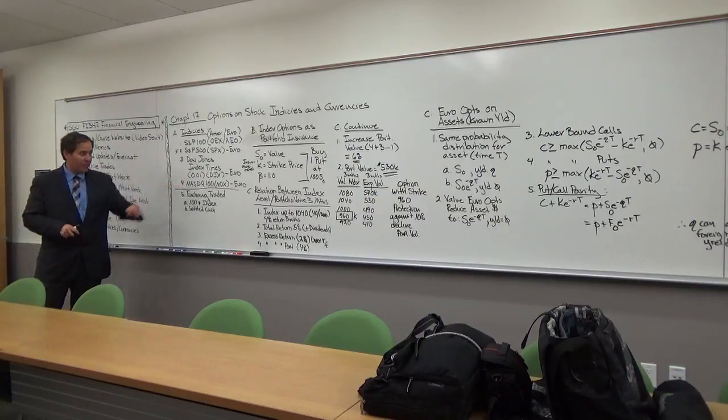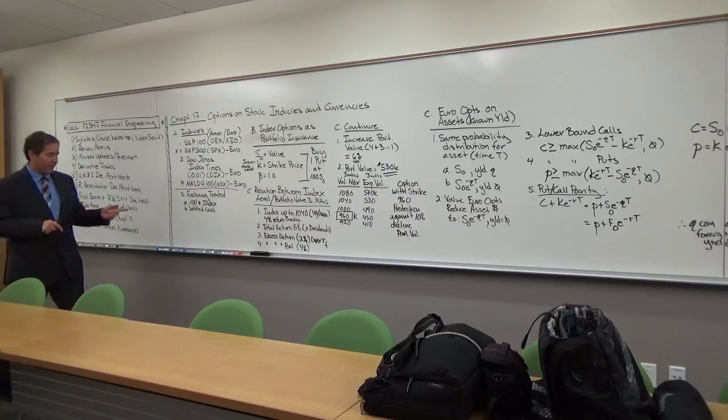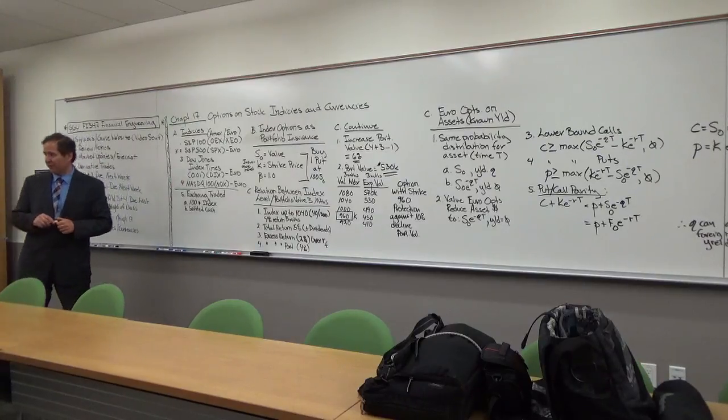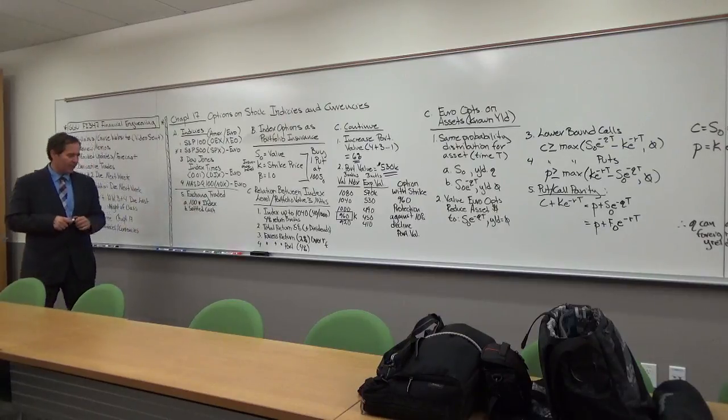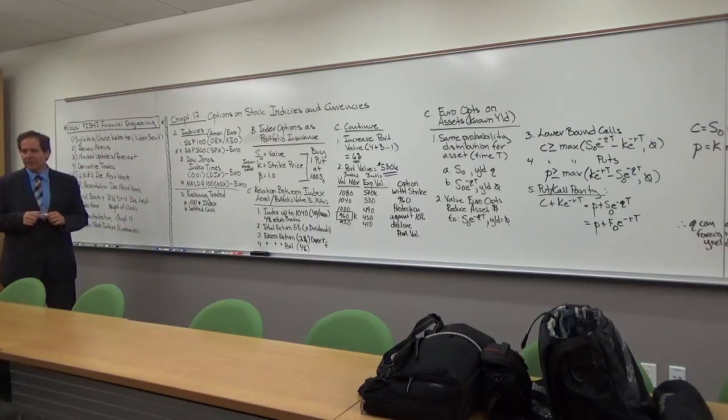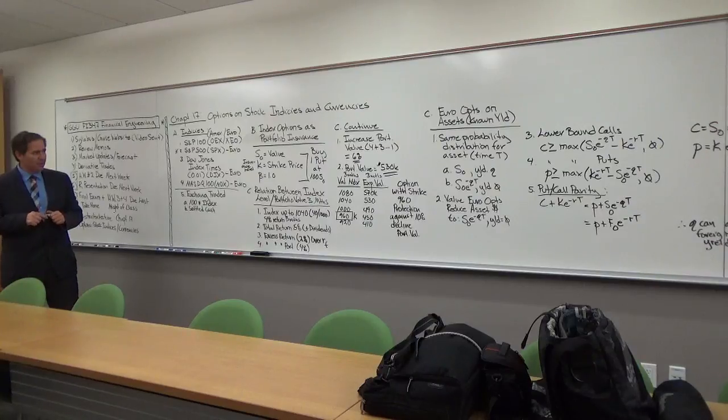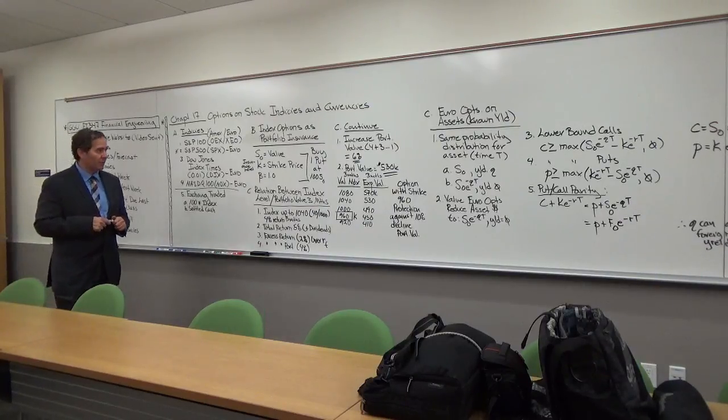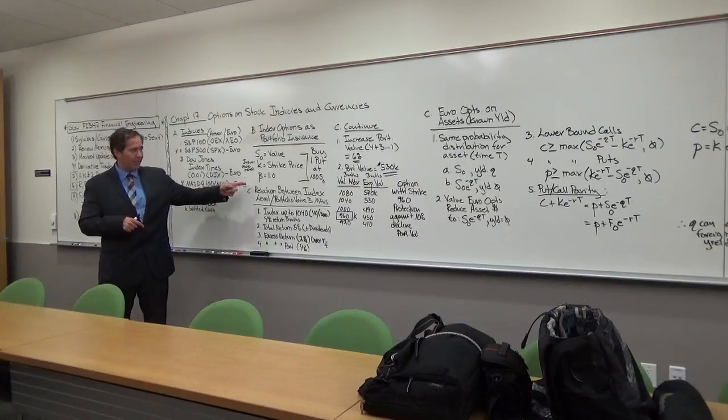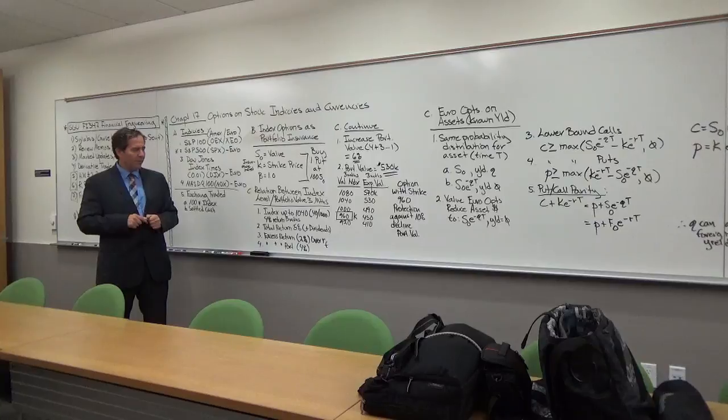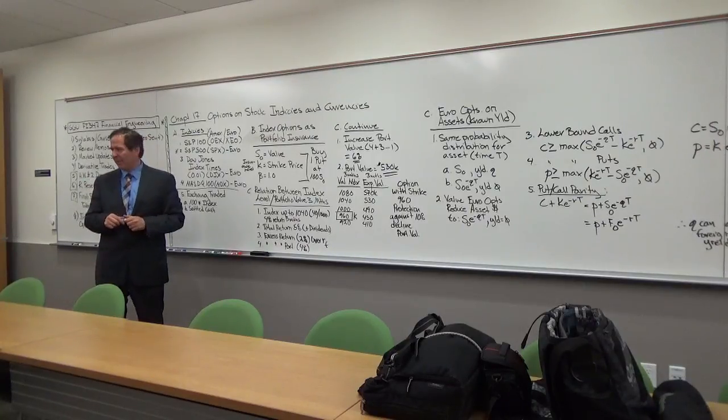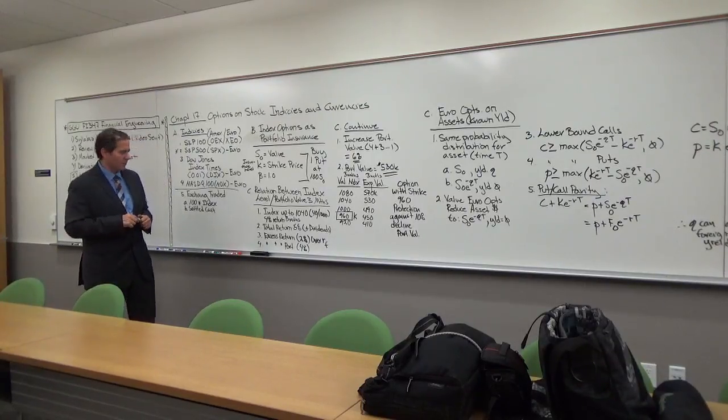And then the Dow Jones DJX, it's also a European option, and the NASDAQ 100 is also a European option. So you exercise at the end of the period. These are exchange traded, so that's 100 times the index and they're settled in cash, so there's no margin on these things. The index options can be used as portfolio insurance. You're going to have the data strike price and then the value. So for example, if you think that the index is going to go down, you're going to buy a put option. So it's pretty straightforward.